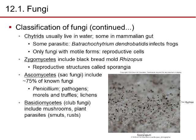Chytrids are usually living in water, some in animal guts, and some are parasitic — like Batrachochytrium dendrobatidis, which infects frogs. Only fungi with motile forms have flagellated reproductive cells. Zygomycetes include black bread mold, or Rhizopus, and their reproductive structures are called sporangia. Ascomycetes, or sac fungi, include 75% of all known fungi — for instance, Penicillium is an ascomycete; morels, truffles, and lichens also belong here. Basidiomycetes, called club fungi, include mushrooms and plant parasites like smuts and rusts.